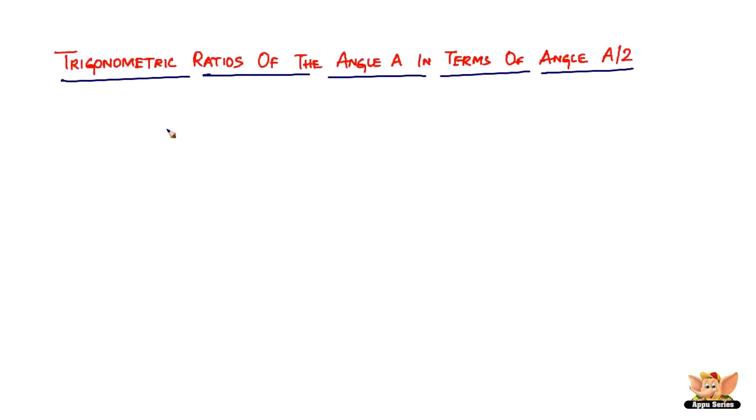In this video, let us look into trigonometric ratios of the angle A in terms of angle A by 2. In the previous video, we saw angle 2A in terms of angle A, so here we're going to see angle A in terms of angle A by 2.